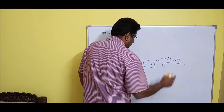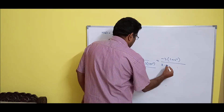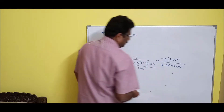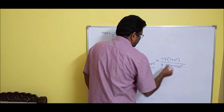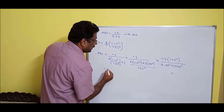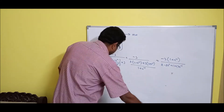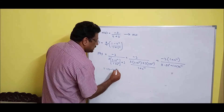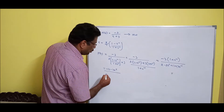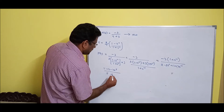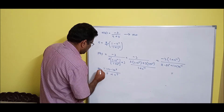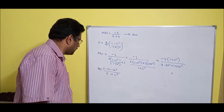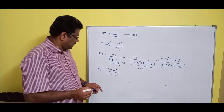Expanding the denominator: 2(1 - z⁻¹) + 3(1 + z⁻¹) = 2 - 2z⁻¹ + 3 + 3z⁻¹ = 5 + z⁻¹. So H(z) = (-3 - 3z⁻¹) / (5 + z⁻¹). That is your H(z), but we need to normalize.